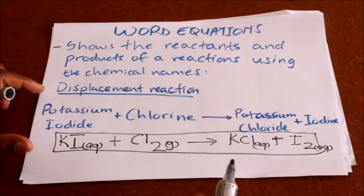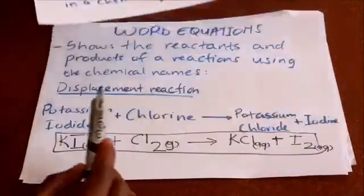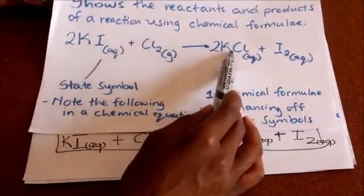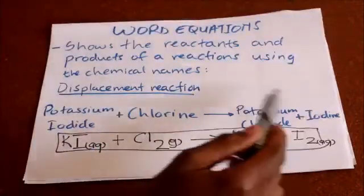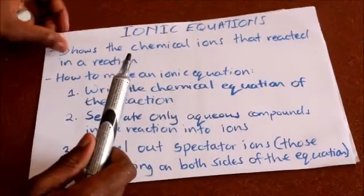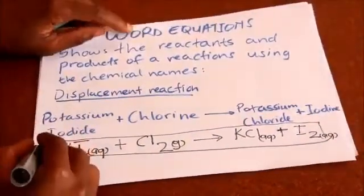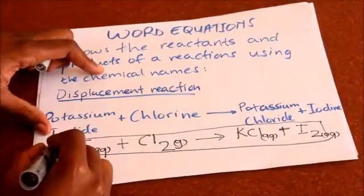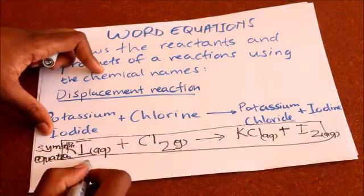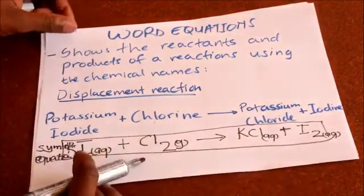For example, in the last example we looked at, if we were asked to write the word equation: potassium iodide plus chlorine gives potassium chloride plus iodine — that is the word equation. And the symbolic equation uses the symbols of these elements or compounds to write the equation.